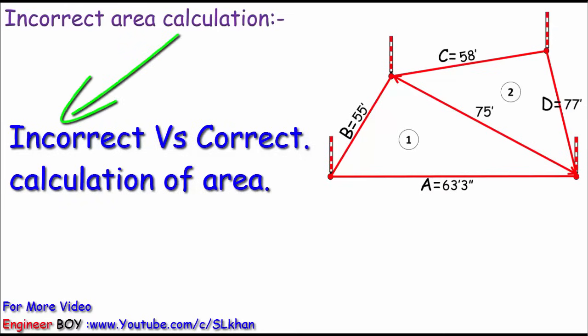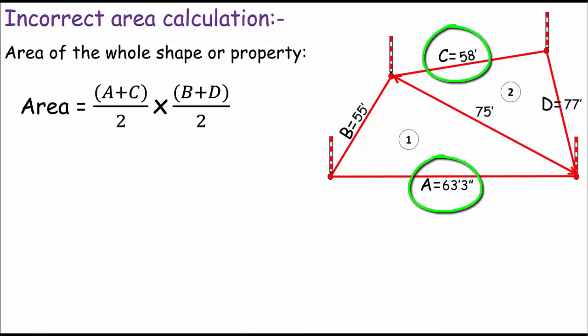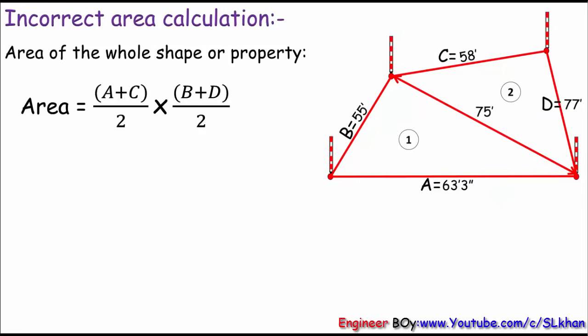For example, this one method. According to this formula, take an average of the opposite sides and multiply it with an average of the other two sides to get the whole area of the given shape. In this case, the total area of the property must be 63.25 plus 58 divided by 2, which is the average of two opposite sides, times 77 plus 55 divided by 2.